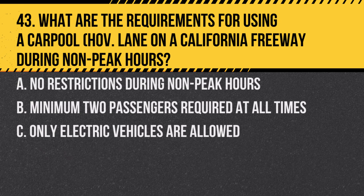Question 43. What are the requirements for using a carpool lane on a California freeway during non-peak hours? A. No restrictions during non-peak hours. B. Minimum two passengers required at all times. C. Only electric vehicles are allowed. Answer: B. Minimum two passengers required at all times. HOV lanes have specific occupancy requirements regardless of the time of day.